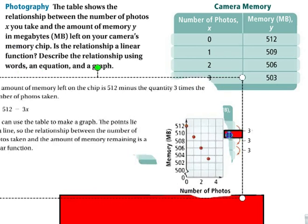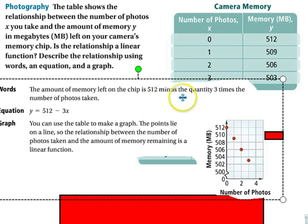And then we have this. So three times the number of photos taken, subtracted from 512, gives us how much is left. So the amount of memory left on the chip is 512 minus the quantity, three times the number of photos. So for one photo, it's minus three. For two photos, it's minus six. For three photos, it's minus nine.